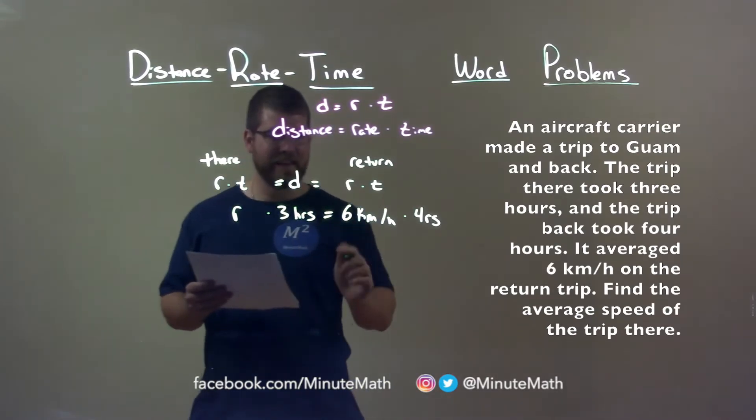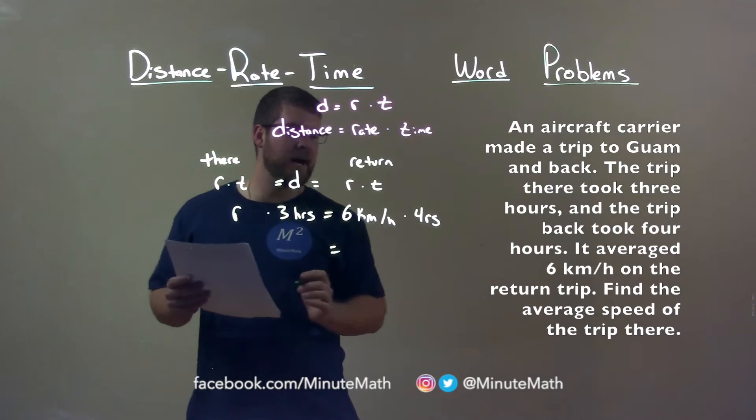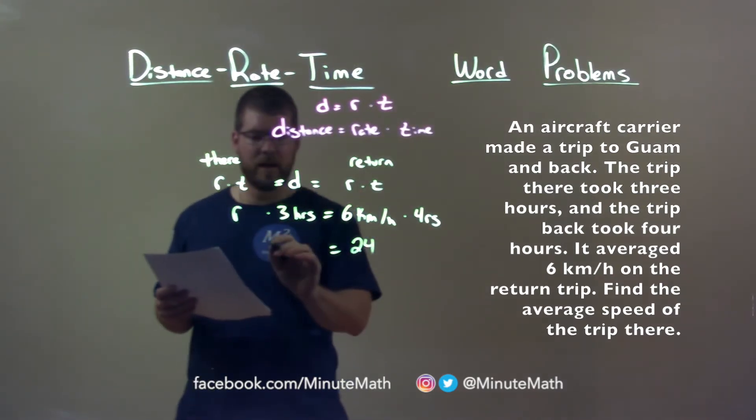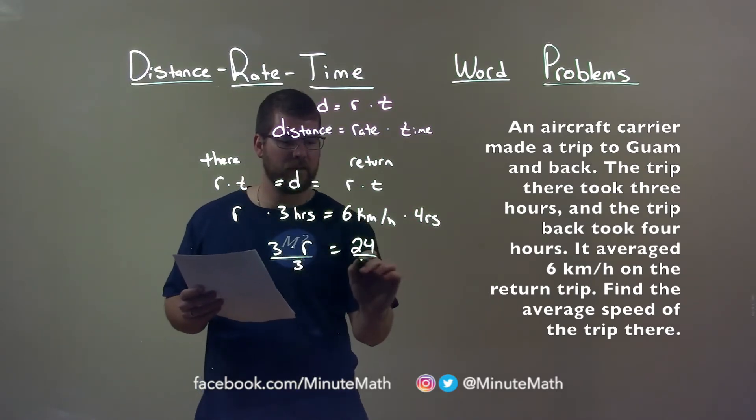Now we have to simplify this. Pretty easy, right? We have six times four, which is 24, and we have three times r here, just rearranged. Divide both sides by three.